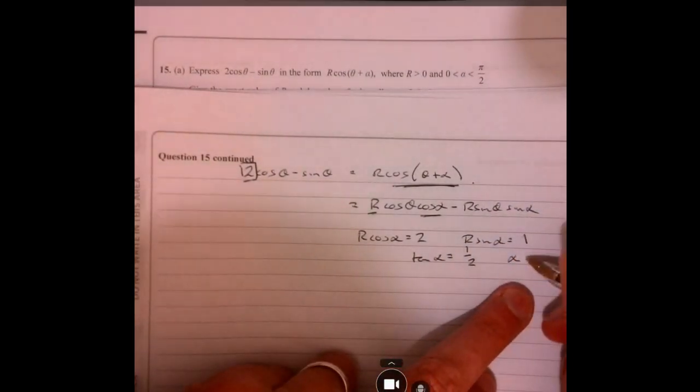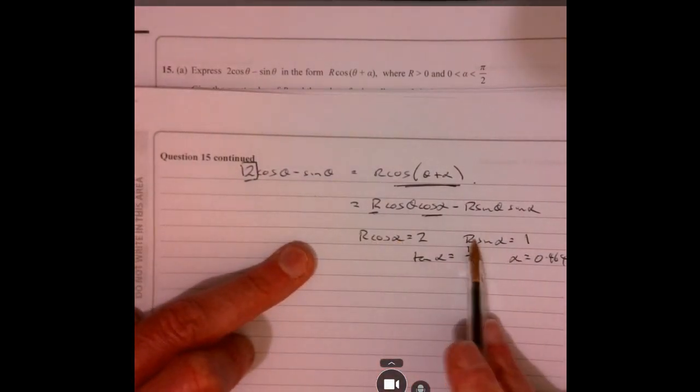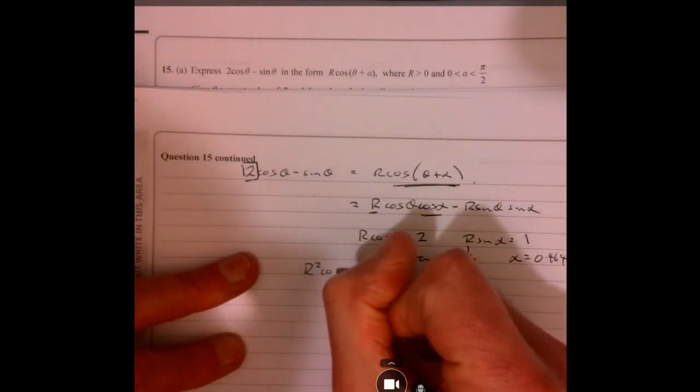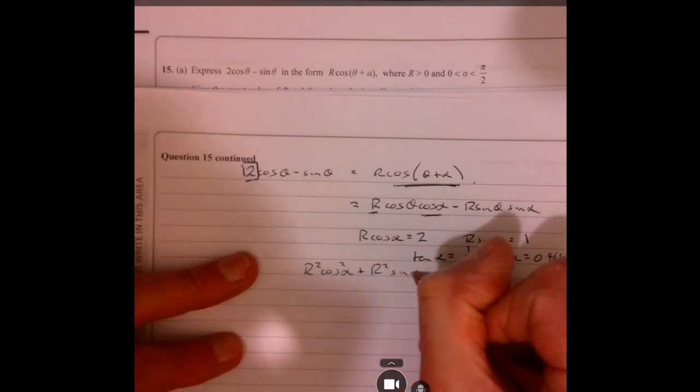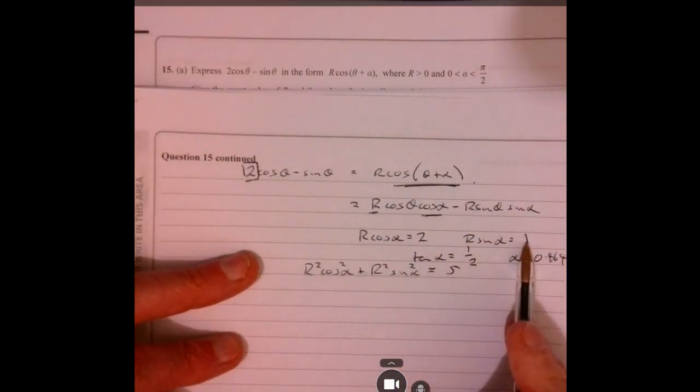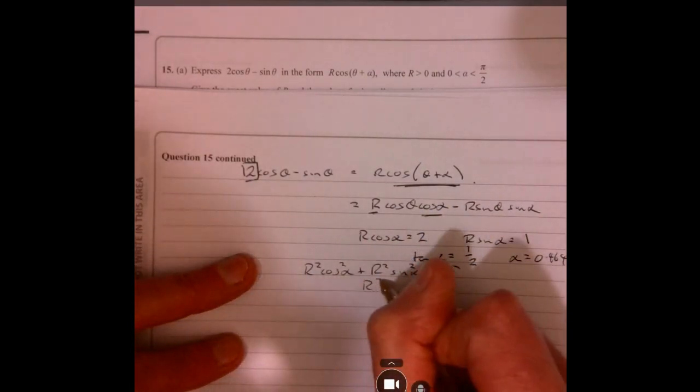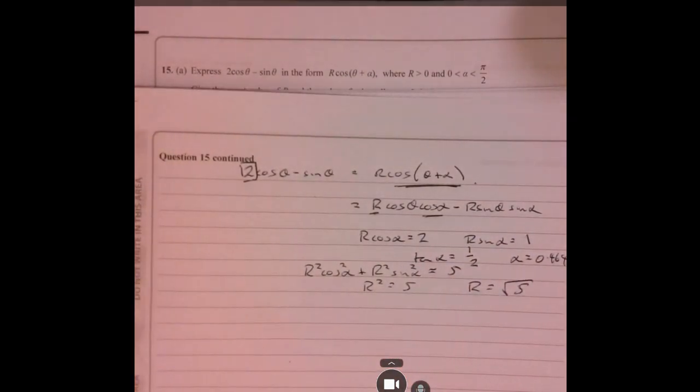Remember, we're working in radians. So this angle must be 0.464. To work out R, if we square this plus the square of this, so that gives you R squared cos squared alpha plus R squared sine squared alpha. We know that it's equal to 5. That's 2 squared plus 1 squared is equal to 5. Remember, cos squared plus sine squared is equal to 1. So R squared equals 5, so R equals root 5.